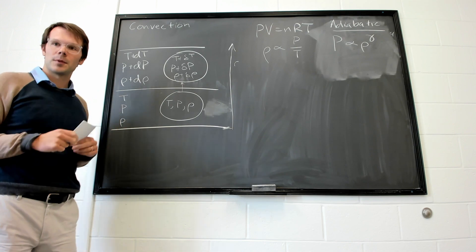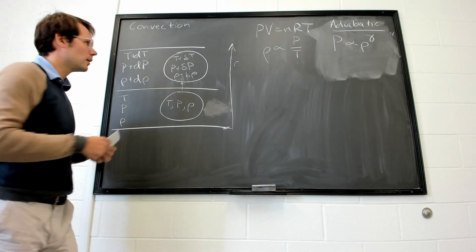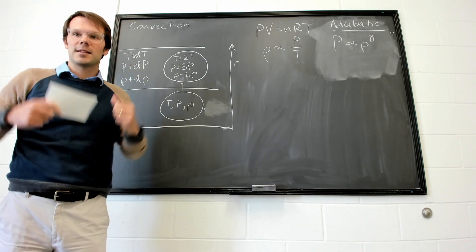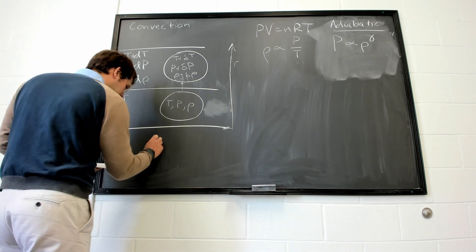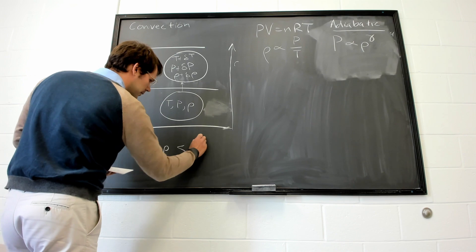It's displacing enough of the surrounding medium that it weighs less than that, and it feels a buoyant force. And so the condition for convection is that delta rho is less than d rho.